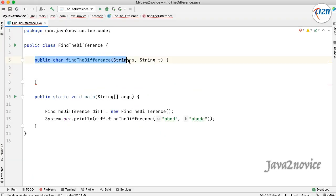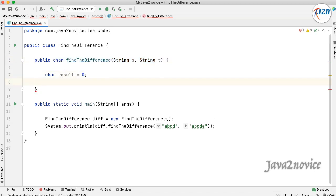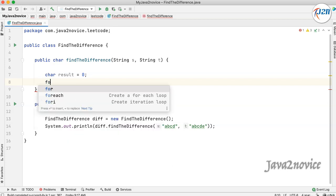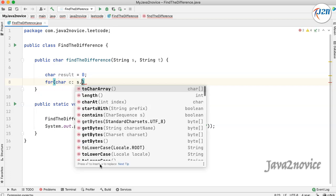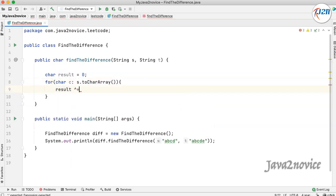I have already copied the method signature from LeetCode directly. Let's declare a variable to hold the final result, the character difference. Now we will loop our string S, read character by character, and apply the XOR operator on each character's ASCII value. We will use a for loop. Here, we are getting the character array and reading character by character, and applying the XOR operator on each character.